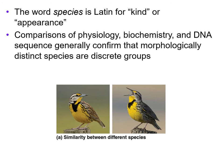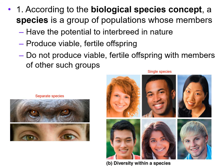We're going to use the word species a lot in this class. So what is it? The word species is Latin for kind or appearance. Comparison of physiology, biochemistry, and DNA sequence generally confirm that morphologically distinct species are discrete groups. To help us understand species, we're going to talk about three types of species concepts.